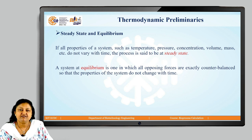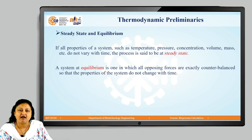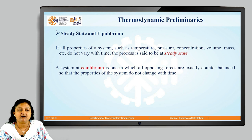How do we differentiate steady state processes and equilibrium processes? If all properties of the system such as temperature, pressure, concentration, volume, mass, etc. do not vary with time, the process is said to be at steady state. A system at equilibrium is one in which all opposing processes are exactly counterbalanced so that the properties of the system do not change with time.